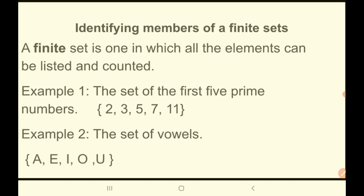A finite set is one in which all the elements can be listed and counted. For example, the set of the first five prime numbers, listed as 2, 3, 5, 7, and 11. The elements are definite, meaning you know all the elements that are in the set. Another example is the set of vowels: A, E, I, O, U — another set that can be counted and where you know all the elements.